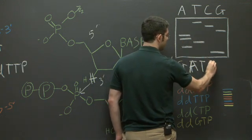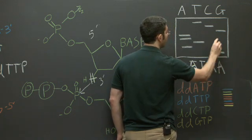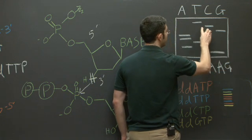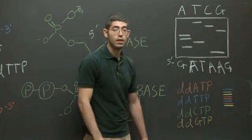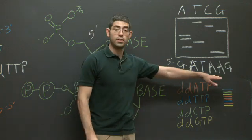Then two As. Then a G. Then a C. Then a T. So as you can see, this is one way to determine the sequence of DNA.